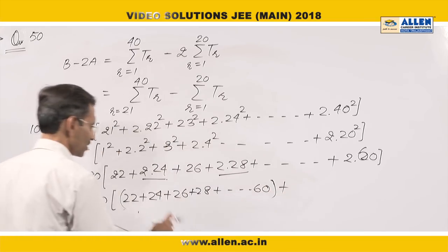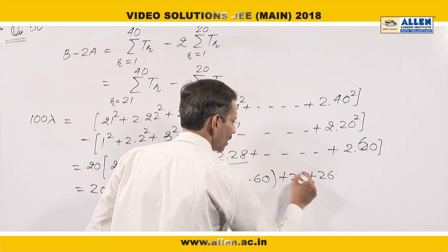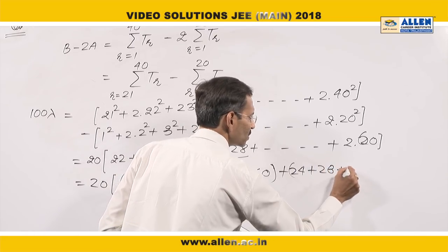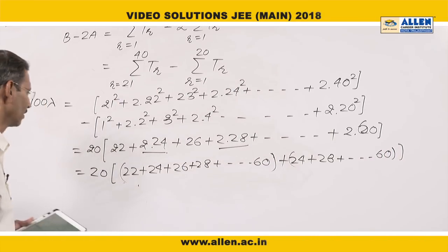Plus the remaining terms. 24, 28, up to 60. So these are 2 arithmetic progressions. We will calculate the sum.